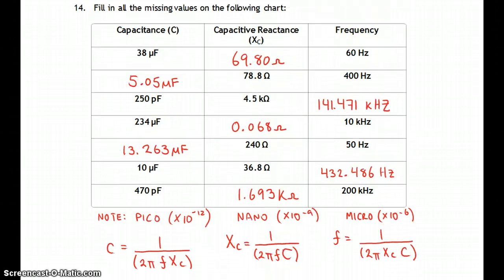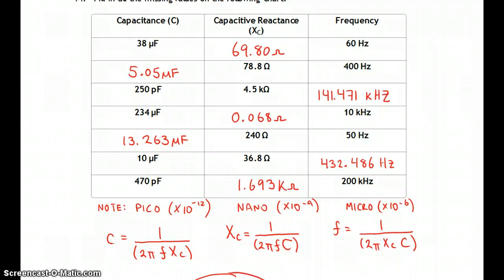Okay, this one's at 60 hertz. 400 hertz, you can see that the reactance goes up. Right? Kilohertz, kilo ohms. Okay, and all the way through. Just be careful with this one. This one's 1.693 kilo ohms.